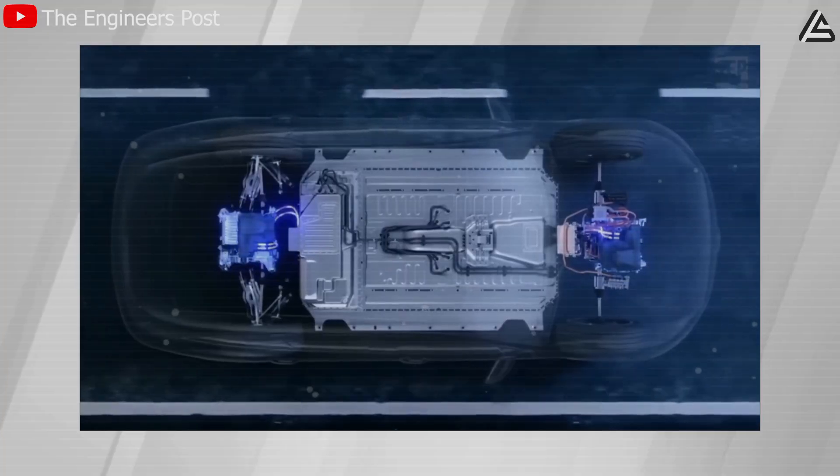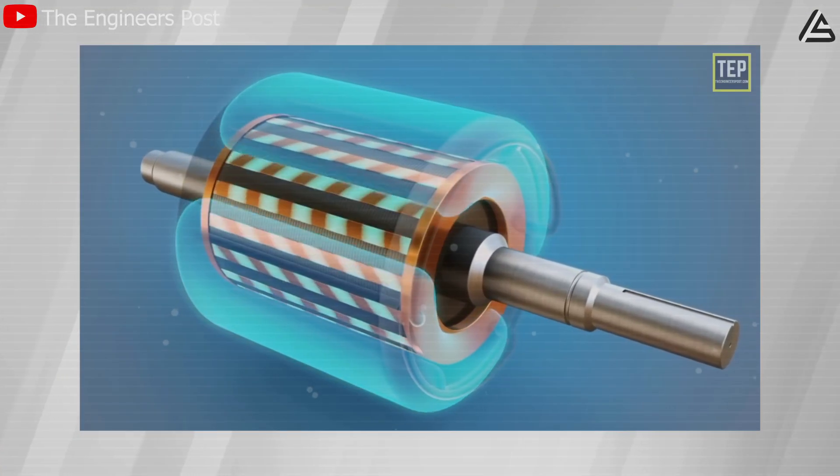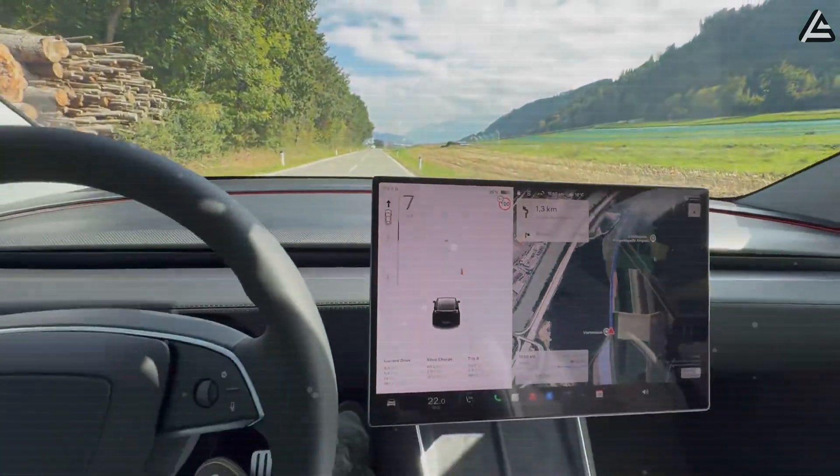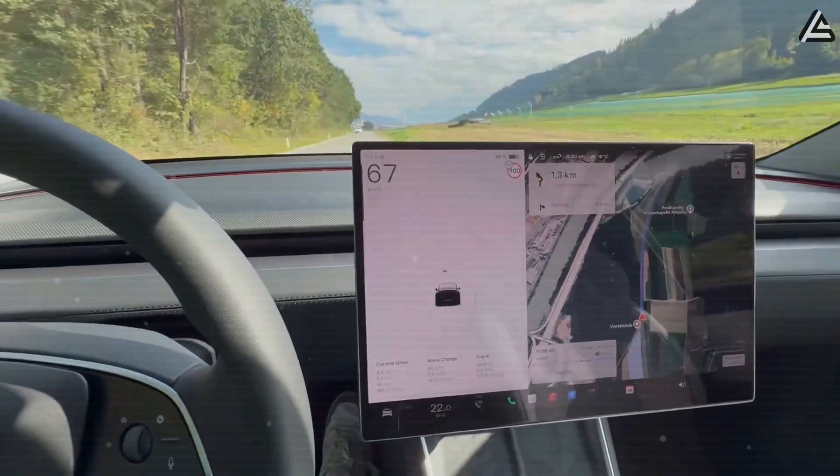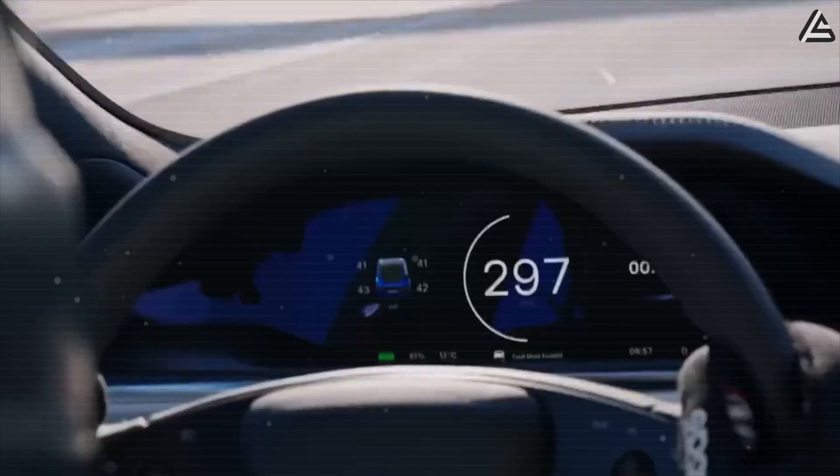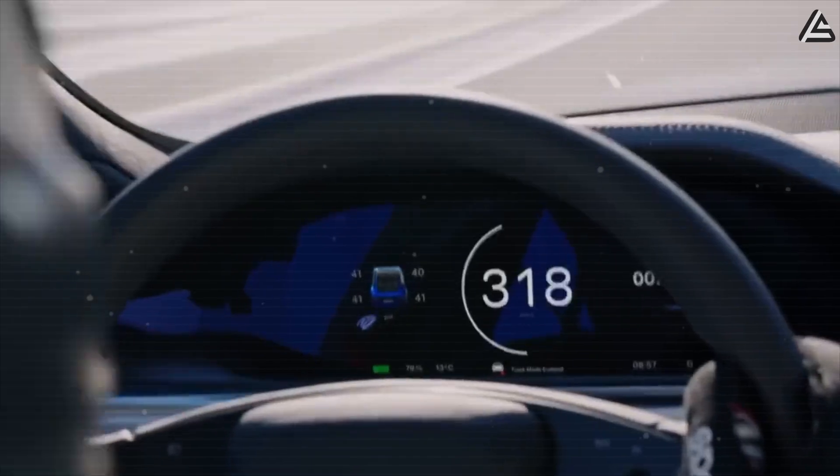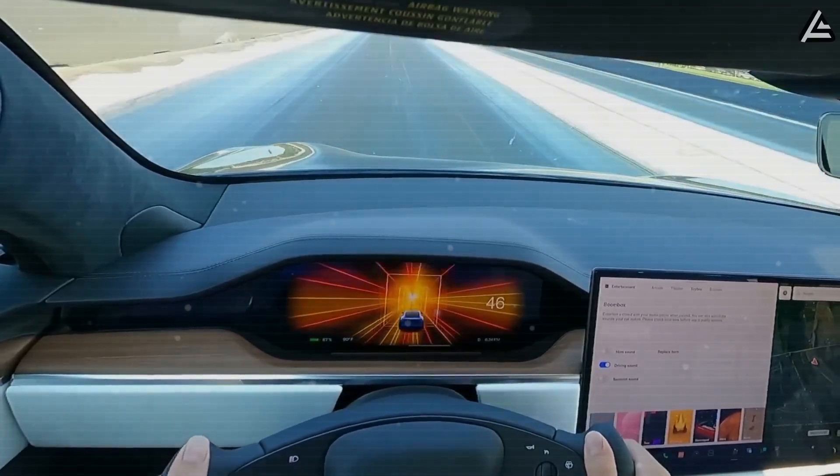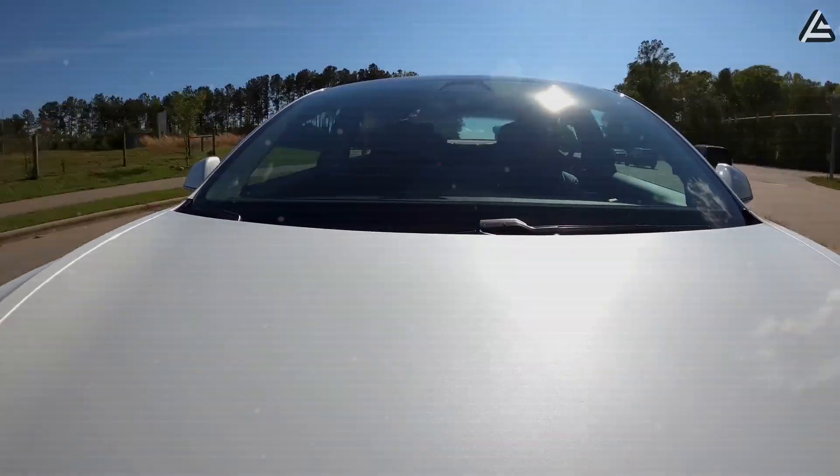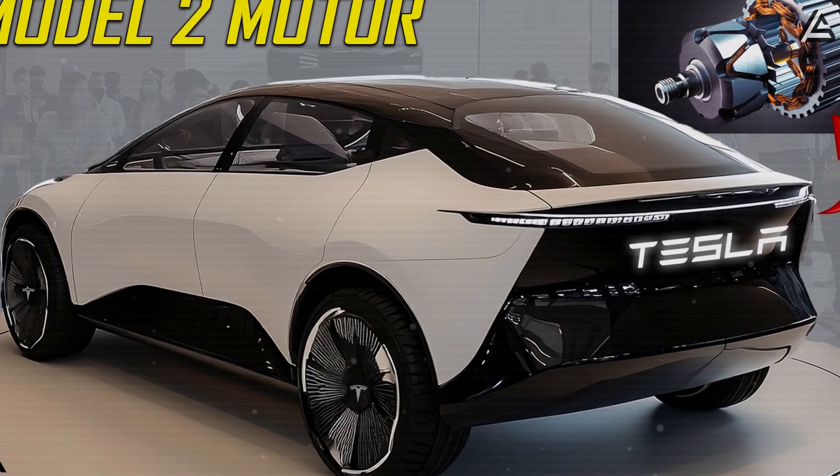The performance numbers tell a different story altogether. With the carbon fiber sleeve allowing rotational speeds of up to 20,000 RPM, the Model 2 can achieve 0 to 60 miles per hour in just 1.95 seconds, edging out even the Model S Plaid's 1.99 seconds. Top speed is expected to exceed 160 miles per hour (257 kilometers per hour), while consuming up to 8 to 10 percent less energy per mile than previous-generation motors at highway speeds.